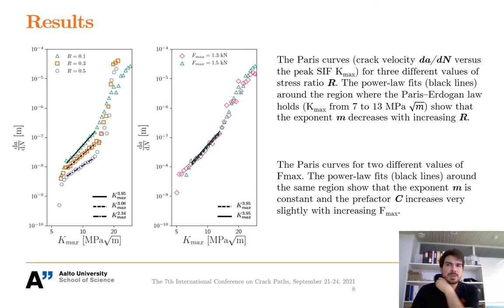The traditional analysis of the Paris curves, shown on this slide, reveals the effect of R and F_max in this alloy. The region where Paris-Erdogan law holds corresponds to roughly K_max from 7 to 13, and the power law fit in this region reveals two things. Firstly, the exponent M decreases dramatically from 3.95 to 2.34, as R increases from 0.1 to 0.5.